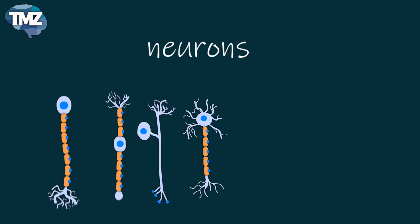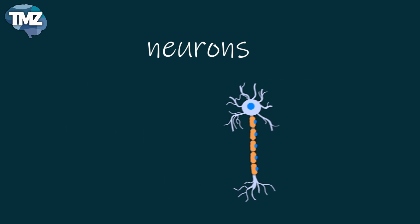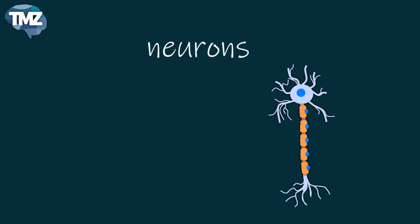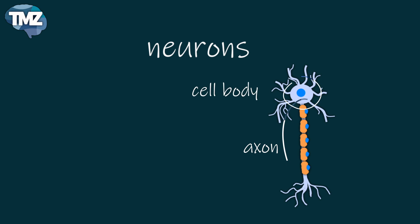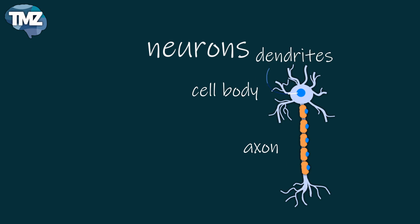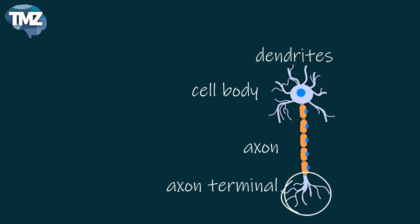Most neurons have several basic properties. They have axons, a cell body, dendrites, and axon terminals.